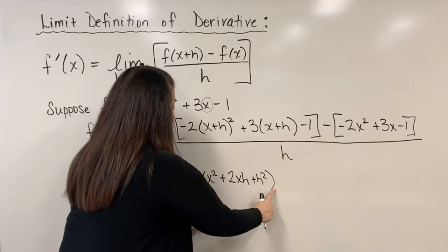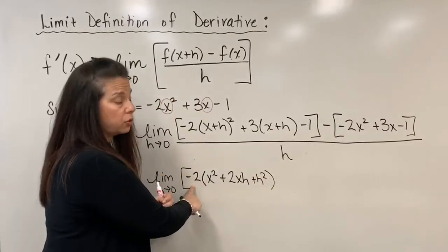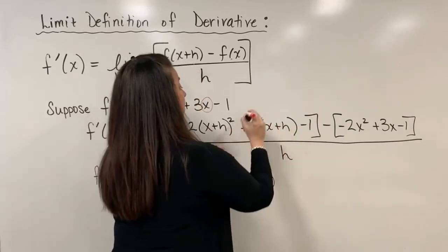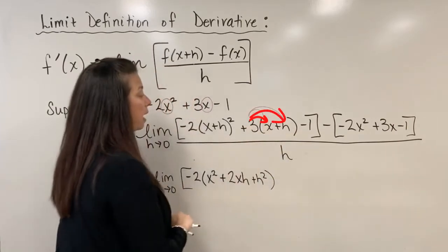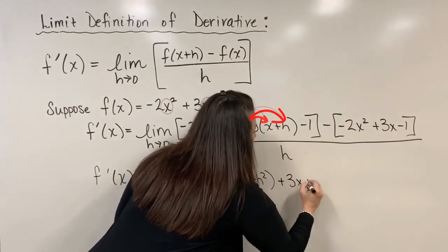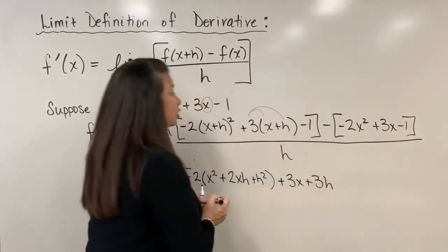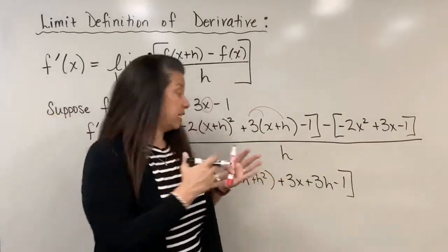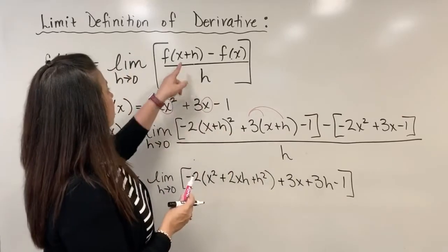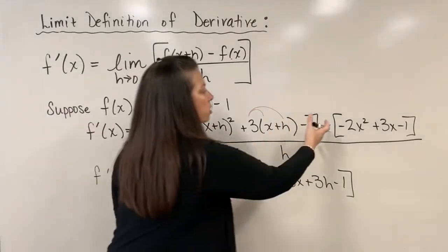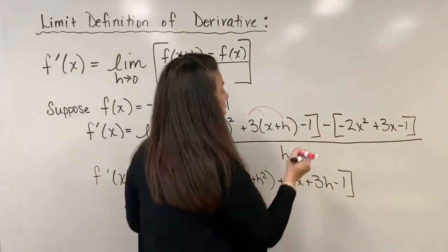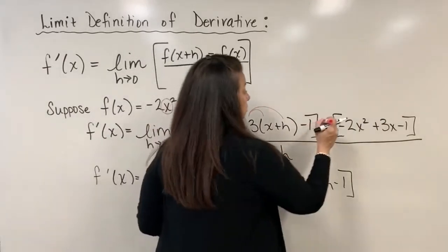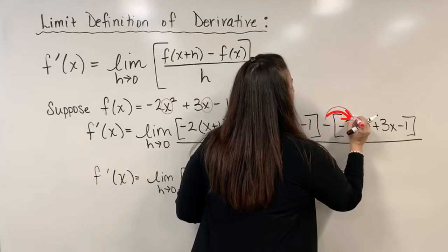I need parentheses because all of that is still being multiplied by negative 2. Now I distribute the 3 on both x and h: plus 3x and plus 3h, then subtract 1 — closing the bracket for the full expansion of f of x plus h. Now I subtract off all three terms of the original f of x, and I must distribute the negative sign across those terms.